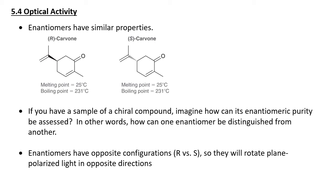Hello everyone. This set of notes is going to cover sections 5.4 to 5.6. In 5.3, we left off talking about enantiomers, how to draw them, how to identify them, what they are. Now in section 5.4, we're going to look at how we differentiate stereoisomers, such as enantiomers, through something called optical activity.